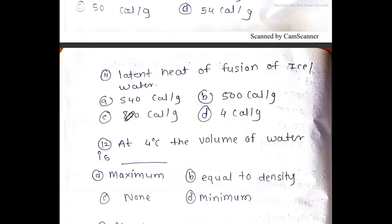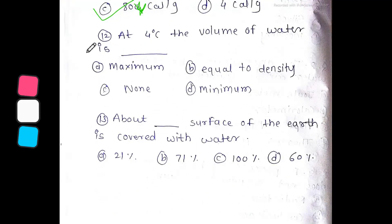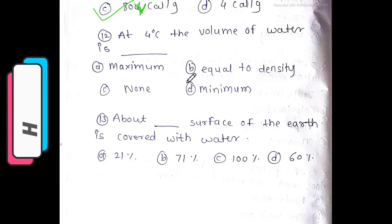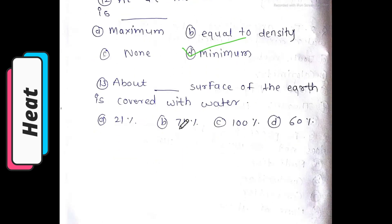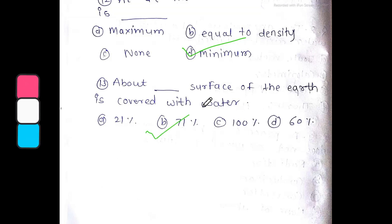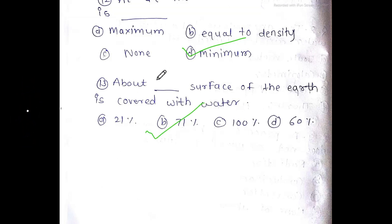The latent heat of vaporization of water is 540 calories per gram. The latent heat of fusion of ice is 80 calories per gram. At 4 degrees Celsius, the volume of water is at its minimum. These values are in the notes for reference.